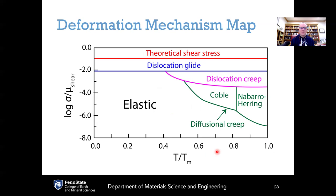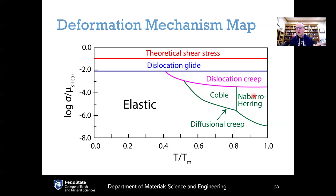Deformation mechanism maps show the dominant mechanism as a function of applied stress and temperature. At low stress and low temperature, the response is predominantly elastic. At higher temperatures and stresses, diffusional creep leads to plastic deformation. Coble creep is activated at lower temperatures than Nabarro-Herring creep, because diffusion along grain boundaries requires lower temperatures than diffusion through the crystalline matrix.